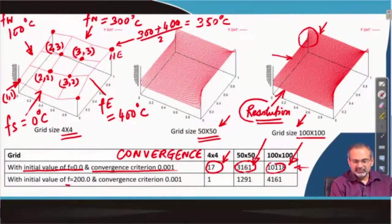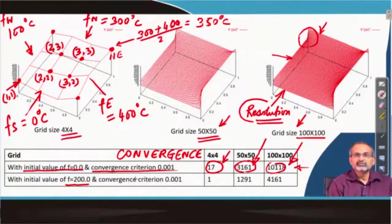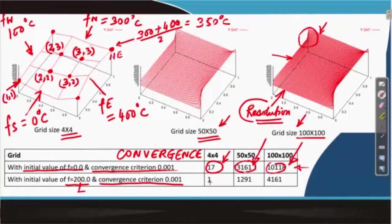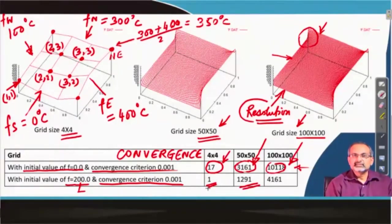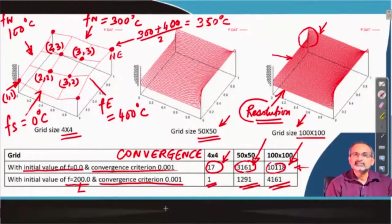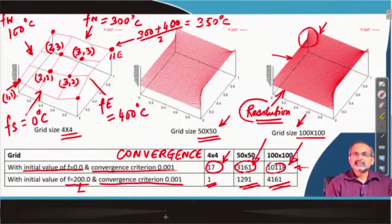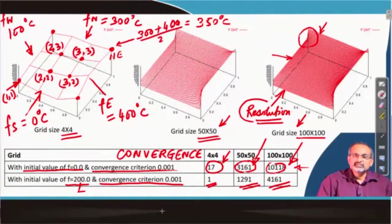Last time, we had made an intelligent guess about the initial value — we took an average of the boundary temperatures and set it as 200 degrees centigrade. With that, we took just 1 iteration to complete on the coarse mesh. On a 50 by 50 mesh it would take 1,291 iterations to converge, and on a 100 by 100 mesh, 4,161 iterations. In general, a more refined mesh will involve more iterations to reach steady state.